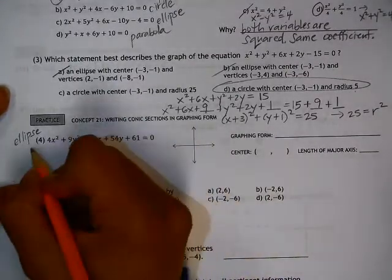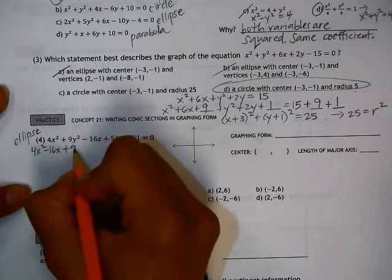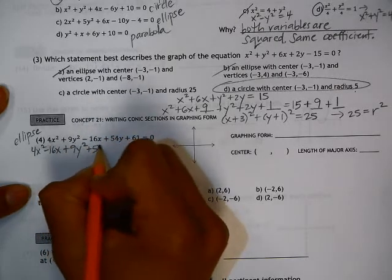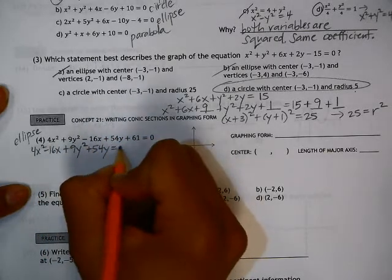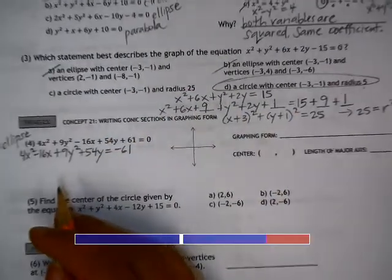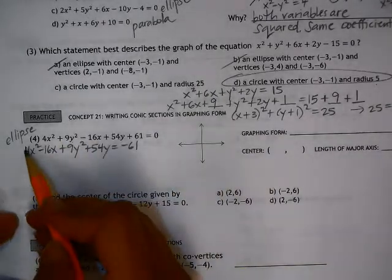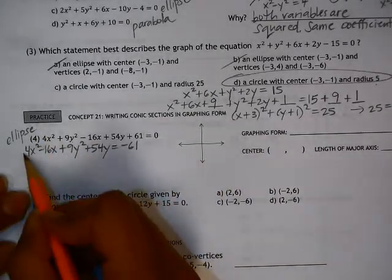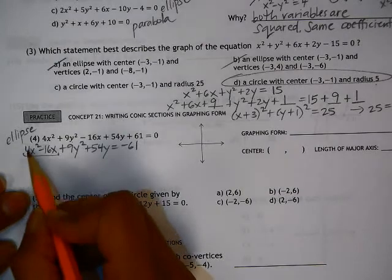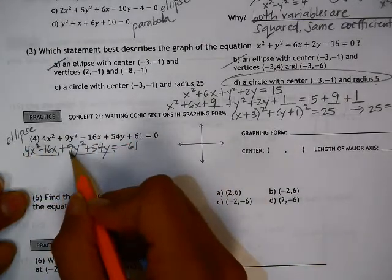So let's start by grouping the x's and grouping the y's. And we'll move the 61 over to the other side. When you're completing the square for this equation, we have to notice here that we have a coefficient other than one in front of the x squared. We also have a coefficient other than one in front of the y squared.